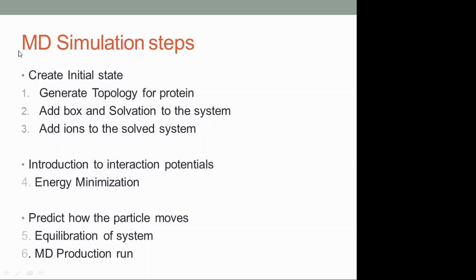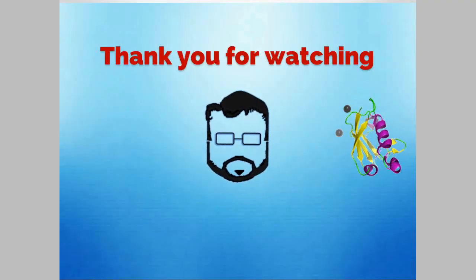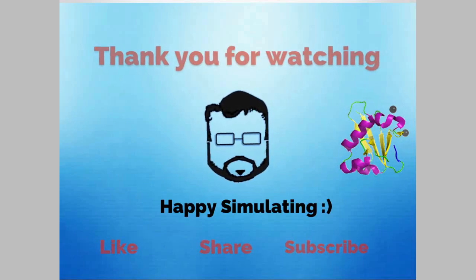So we are finished generating the topology file (1aki_processed.gro), creating the box (1aki_newbox.gro) in cubic shape, and the solvation step (1aki_solv.gro) which added the water molecules. In the next video we will be performing how to add ions to the solvated system. Hopefully you have understood how to create a topology and a box file. Thank you.